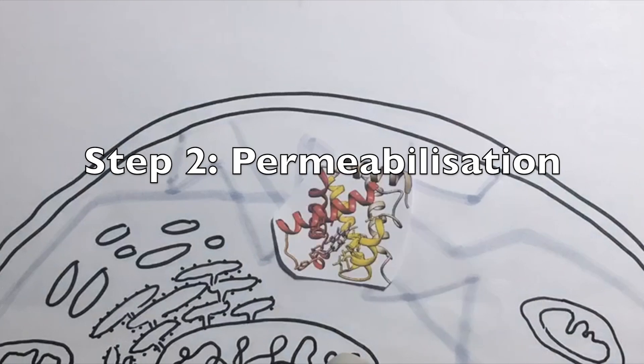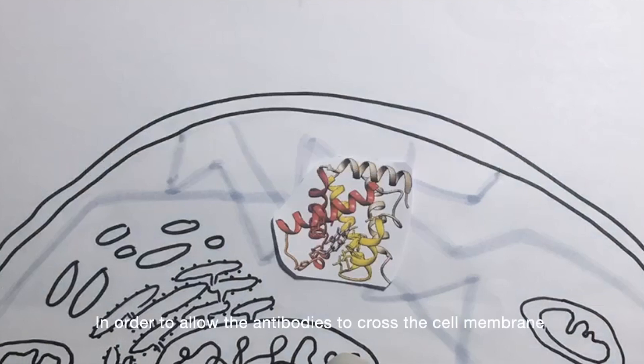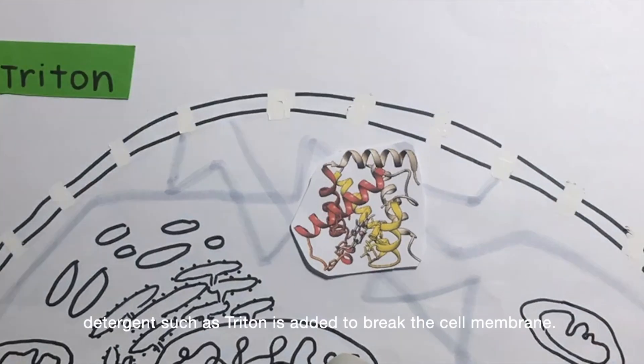Step 2, permeabilization. In order to allow the antibodies to cross the cell membrane and have access to the protein of interest, detergent such as triton is added to break the cell membrane.